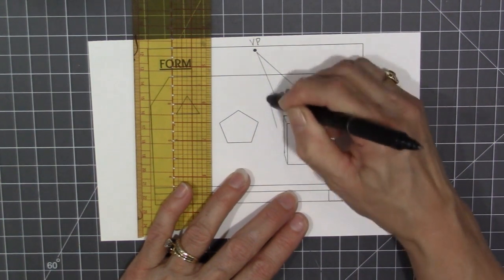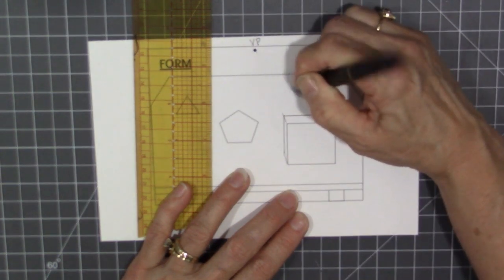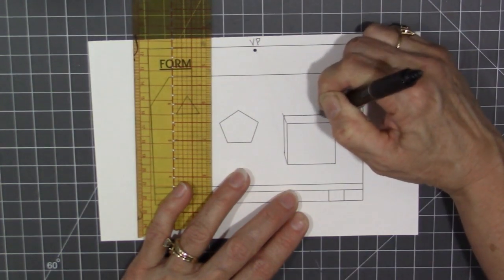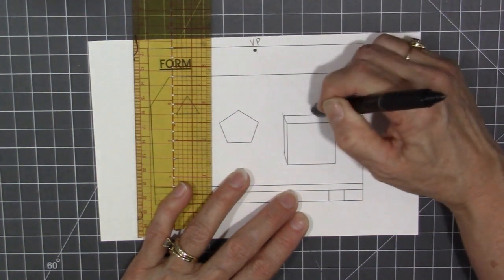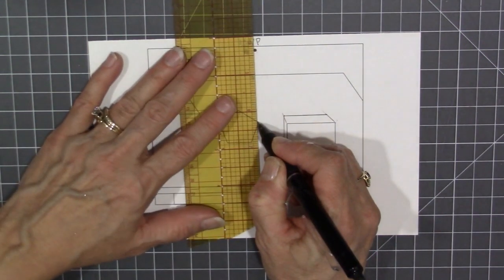When you're done, you're going to erase the vanishing lines that are left over and then move on to the next form which will be the pentagon.